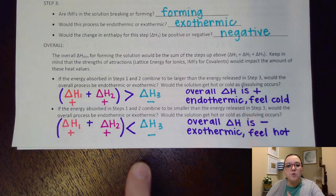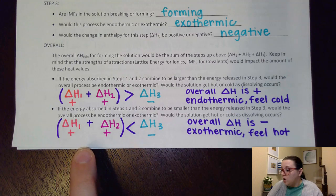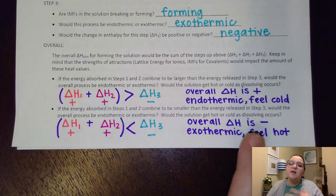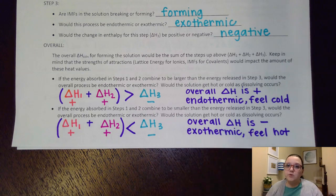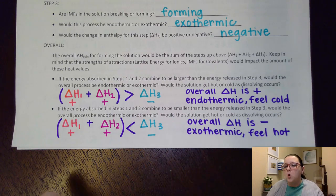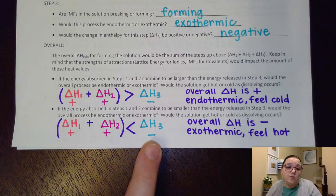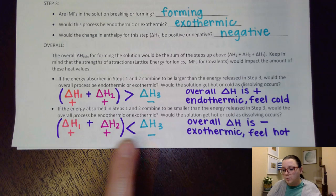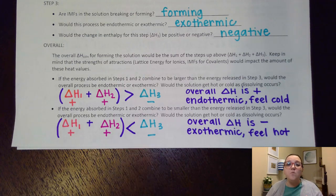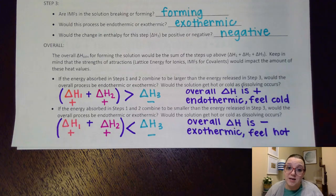On the flip side, if the heat that I release when those IMFs reform is significantly bigger than the energy I put in to break them, then overall the delta H would be negative, my process would be exothermic, and it would feel hot. Most dissolving processes are exothermic. The reason why is because if I'm releasing more than what I put in, my product is typically more energetically stable potential-energy-wise — going from higher to lower potential energy is always more thermodynamically favorable. However, we can get dissolvings that are endothermic; that just happens to be way less common.